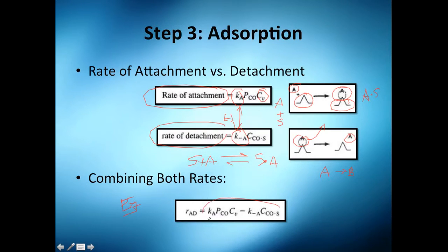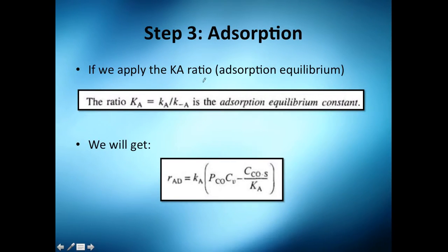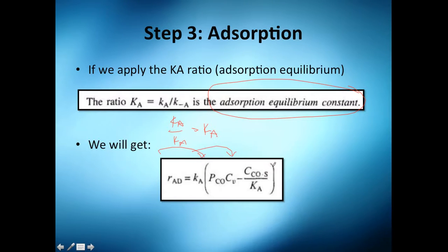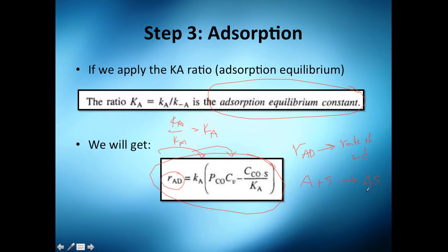As you probably know, at chemical equilibrium you just add the rates of reactions to get the overall rate of reaction. If we define K_A over K_(-A) as my equilibrium adsorption constant, I can apply it and simplify into this expression. This rate of adsorption can be considered like a reaction — A plus S forming the occupied active site — though it's not a reaction per se.